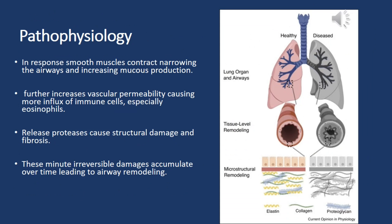In response, smooth muscles contract, narrowing the airways and increasing mucus production. This further increases vascular permeability, causing more influx of immune cells, especially eosinophils. Released proteases cause structural damage and fibrosis. These minute irreversible damages accumulate over time, leading to airway remodeling.